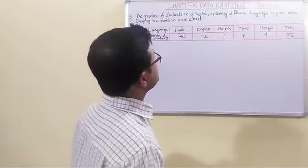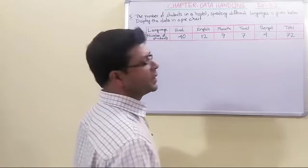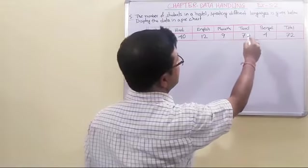The number of students in a hostel speaking different languages is given below. Display the data in a pie chart. These are the languages: Hindi, English, Marathi, Tamil, Bengali.